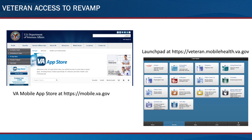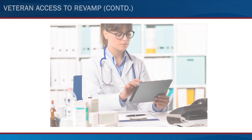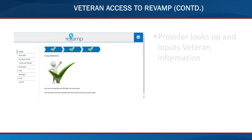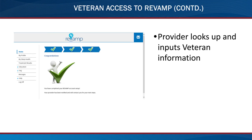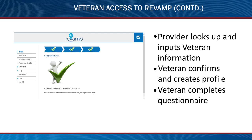Veterans can access REVAMP through the VA Mobile App Store and Launchpad. Once the provider creates an account for the veteran on REVAMP, veteran access is an easy process. Initially, the provider looks up and inputs the veteran's information into REVAMP. The veteran then receives notification to confirm and provide more information to create a profile. The veteran completes a questionnaire through a series of prompts to finish the intake process and provide a baseline to the provider.